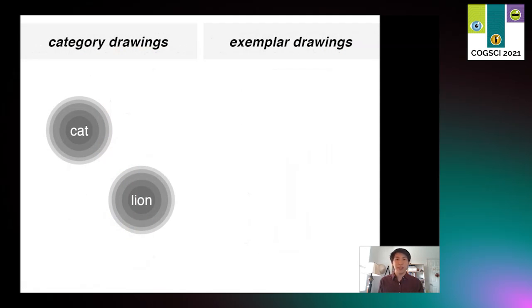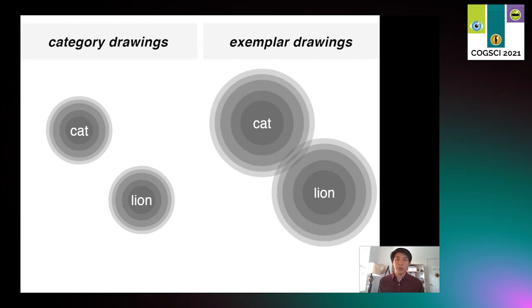So what might explain these differences in category evidence across conditions? Well, one might expect that across participants, different label-cued category drawings contain similar features that are the most diagnostic of a given category. And so maybe this enhanced classifiability is really reflecting some greater systematicity in what people actually find relevant to include in category drawings. By contrast with exemplar drawings cued with photo, which by aiming to capture the idiosyncratic properties of each exemplar, they may have spurred greater variation across drawings, and this might make them more difficult to classify.